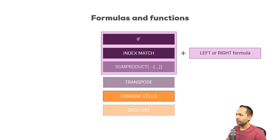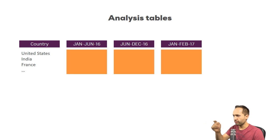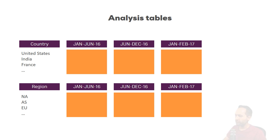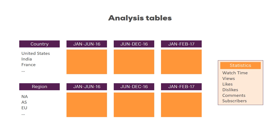Now that we know what formulas and functions we are going to use, let's take a look at what we actually want to do. We want to create analysis tables — retrieving the information we need in the format we want. We want a list of countries with statistics by different periods, and a comparable table for regions like North America, Asia, and so on. The statistics should be selectable from a list so we can choose which statistic is displayed.